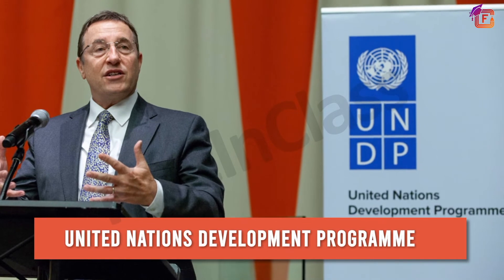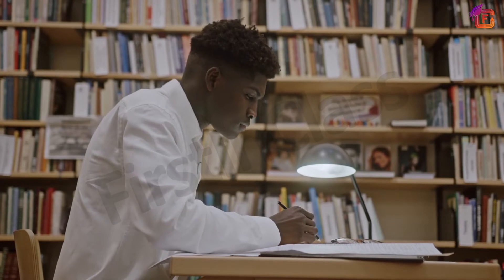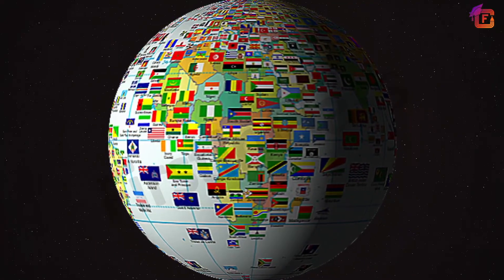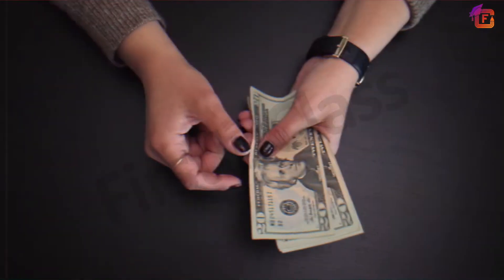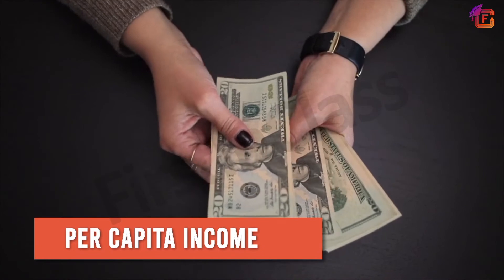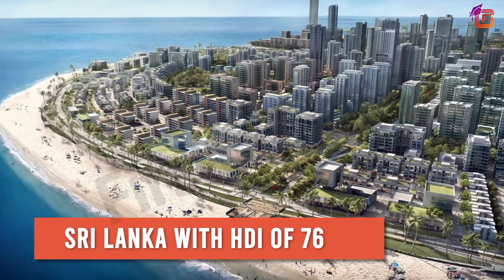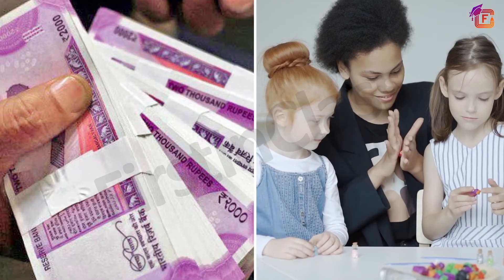Now let's discuss the human development report. The human development report is a composite index published by the United Nations Development Programme that compares countries based on the educational levels of the people, their health status, and per capita income. Countries are compared based on the HDI, that is the Human Development Index. It is calculated based on per capita income, life expectancy, BMI, etc. Sri Lanka, with an HDI of 0.76, is ahead of India because of its higher literacy rate and income.